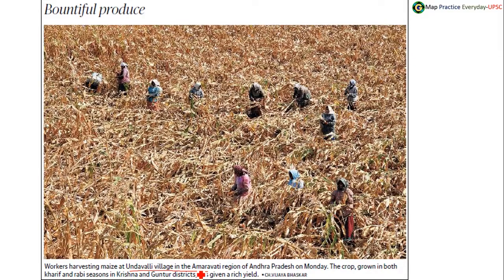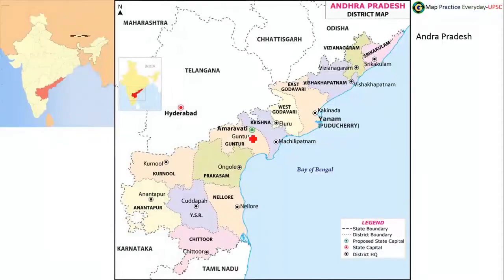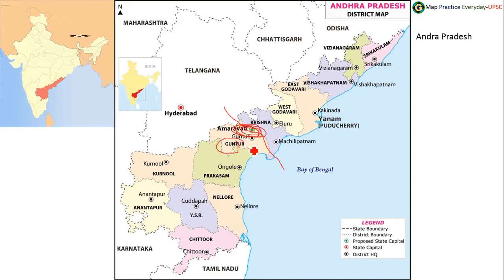Bountiful produce — this picture is taken from a valley village of the Amaravati region, which is present in Andhra Pradesh. Amaravati is the newly selected capital city of Andhra Pradesh, located on the banks of the Krishna River. The village Undaveli is present somewhere near the Amaravati region. Other places mentioned include Guntur and Vijayawada, which are all in this vicinity.